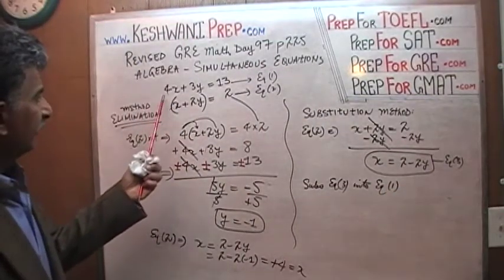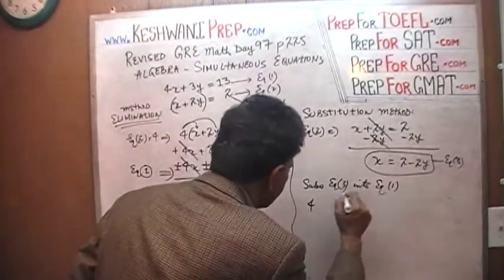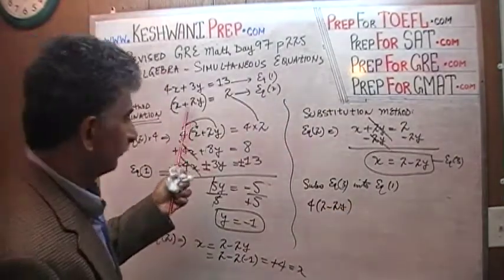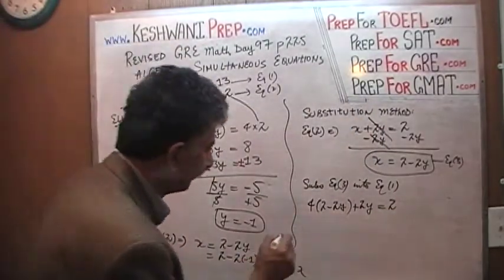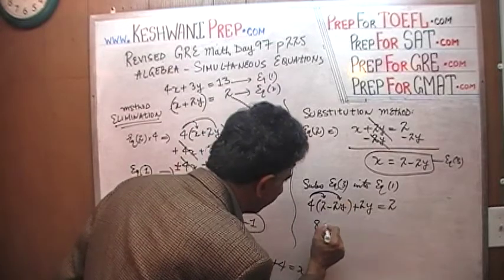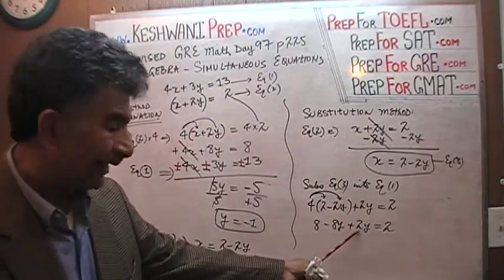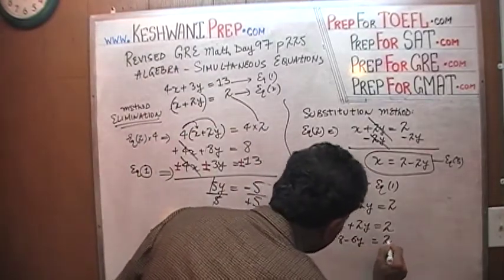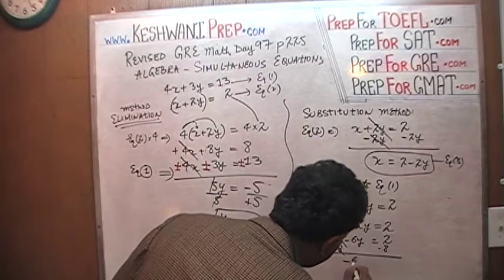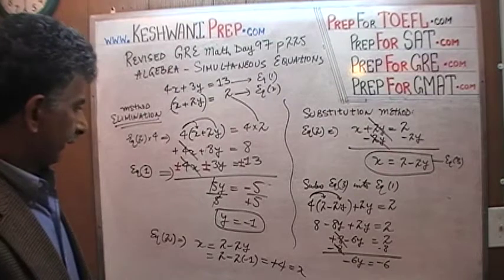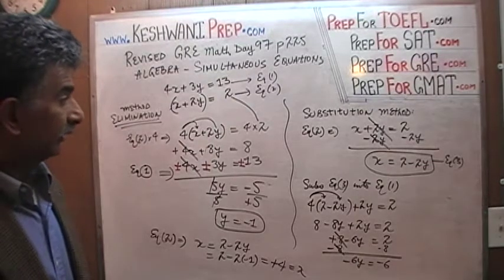Equation number 1 says 4 times x. Now we know x equals 2 minus 2y, so we put it in: 4 times 2 minus 2y, plus 2y equals 2. Now we just simplify: 4 times 2 is 8, 4 times negative 2 is negative 8, plus 2y equals 2. Negative 8y and positive 2y give us negative 6y. So we have 8 minus 6y equals 2. Subtract 8 from both sides — this 8 drops out — and negative 6y equals negative 6, giving y equals positive 1. We have a problem — we are not getting the same answer. I have made what is known in technical terms as a booboo. Let's find out where our booboo was.